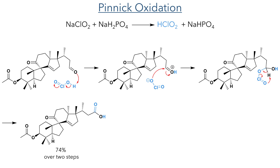This aldehyde was oxidised further using Pinnick oxidation. The reaction of sodium chlorite with sodium hydrogen phosphate generates chlorous acid, which protonates the aldehyde making it more electrophilic, allowing the chlorate to attack the carbon centre. An intramolecular hydrogen abstraction of this tetrahedral intermediate then occurs, forming the desired carboxylic acid in a 74% yield over two steps.